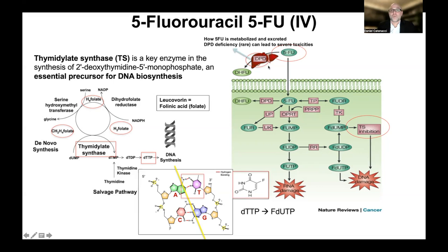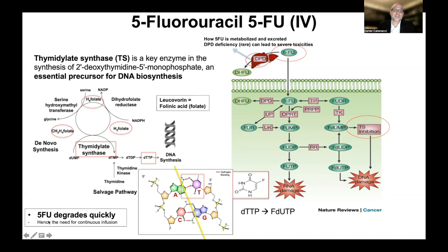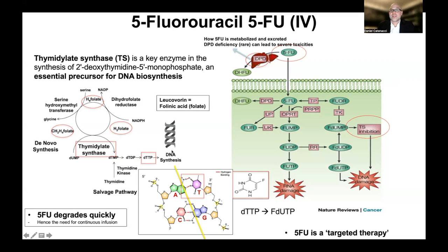This is a topic called pharmacogenomics - testing for a patient's ability to degrade chemotherapy drugs, to preempt problems in those patients and perhaps give a lower dose to begin with. 5-FU degrades quickly, so it is administered via pump as a continuous infusion because it wouldn't last long enough if given as a quick IV push. In summary, 5-FU is a targeted therapy - targeting a known enzyme important in DNA synthesis required by cells to divide, which is the hallmark of cancer cells.